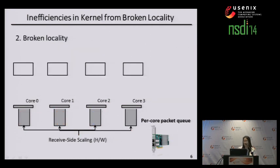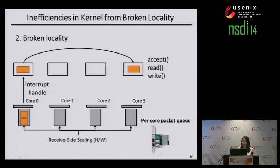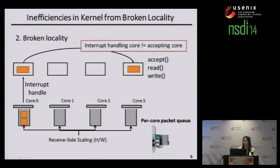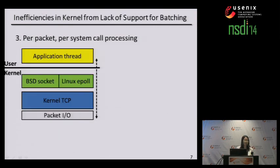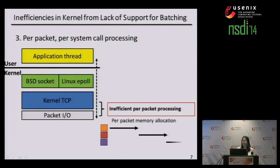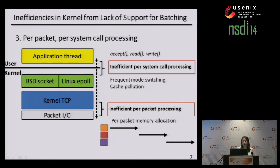The second inefficiency is broken locality between the core processing packet IO interrupts and the core handling the connection. For example, if packet IO interrupts for a connection go to core 0, and core 3 accepts the established connection, then core 3 will access the connection context to read or write the byte stream — this broken locality causes cache line sharing between two cores. The last inefficiency is the lack of support for batching in the kernel for packet IO as well as socket system calls. When a packet arrives, the kernel processes it with per-packet memory allocation and deallocation. Frequent system calls for accessing socket context such as accept, read, or write impose mode-switching overhead as well as cache pollution.